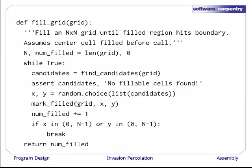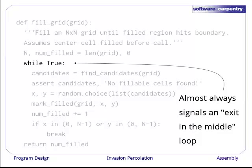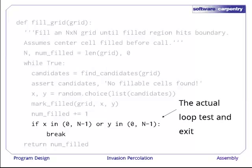The next function in our to-do list is fill_grid. The docstring says it fills an N by N grid until the filled region hits the boundary. It assumes that the center cell has been filled before the function is called. We begin by setting up the variables N and num_filled. N is the grid size, and num_filled is the number of cells that this function has filled so far. We've squeezed these two variables onto one line so that our function will fit on a slide. In a real program, we'd put each on a separate line. We then go into what looks like an infinite loop. The loop guard is while True, and since True is always true, this loop should never exit. However, in Python and most other languages, anything that looks like a deliberate infinite loop almost always signals a loop that exits in the middle. And in fact, that's the case. Down near the bottom of this loop, we test a condition and use break to break out of the loop if that condition is true. This is a very common idiom.